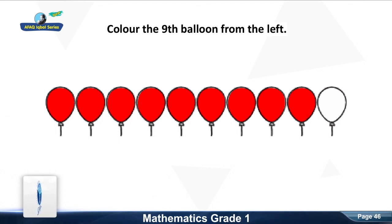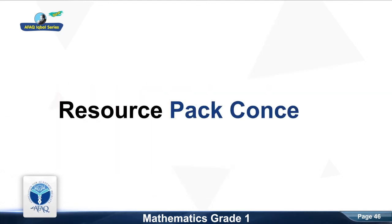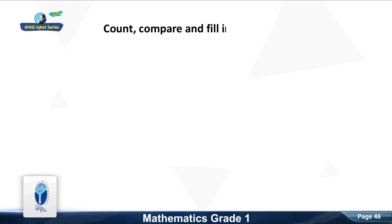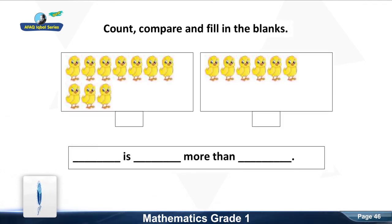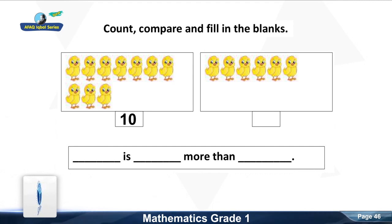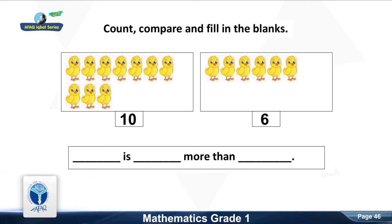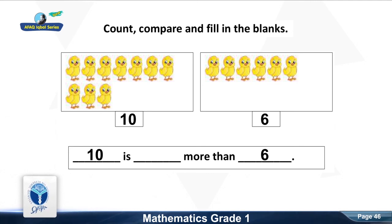Now we move to the next resource pack concept. Color the 9th balloon from the left. Good. Now we move to the next resource pack concept: count, compare and fill in the blanks. Count the chicks in the left box. Good, it is 10. Write 10 in the box below. Now count the chicks in the right box. Good, it is 6. Write 6 in the below box. What number is more in 10 and 6? Good, 10 is more than 6.